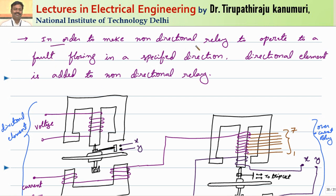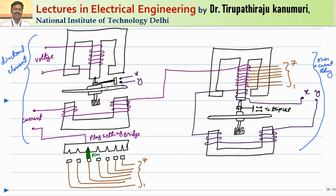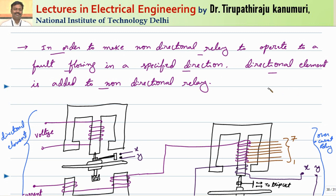In order to make this non-directional relay operate for a fault flowing in a specific direction, one extra directional element is required, added to the non-directional relay. To find the direction of power, we take a reference voltage. Under normal fault conditions the current is lagging. If the direction of power is changed, the voltage is not changed but the direction of the current is now reversed.